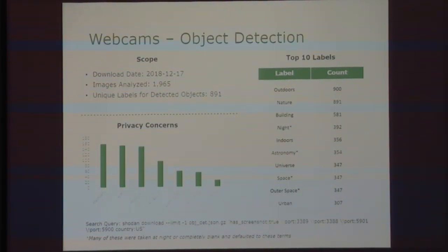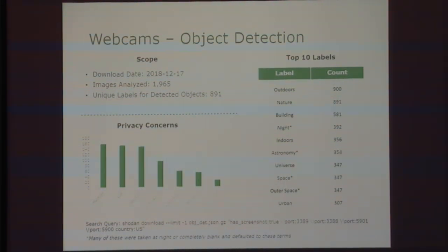I actually did some OSINT and found five people who had open webcams. I contacted them and got one response back — a small yogurt shop in Ohio that said 'Oh my gosh, that's awful, how do I fix it?' So I told them. But I don't know if other people thought I was a creep or just didn't care. I mean, what would you do if you got an email like that? Probably delete it.